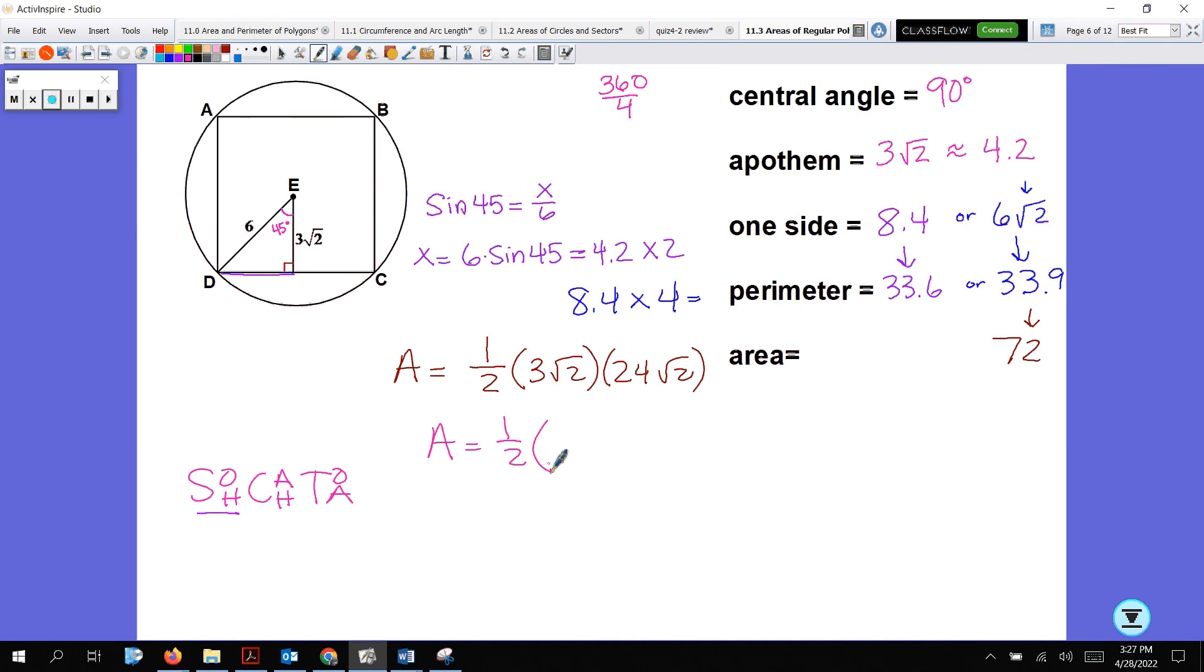If I just use my decimal, one-half times 4.2 times the perimeter 33.6, I get 70.6, which is 70.6. A difference, isn't it? What I'm going to suggest is if you're given the apothem, use it. Because that's a pretty big difference here. 70.6 and 72, that's a pretty big difference.